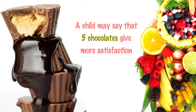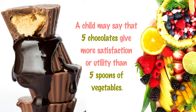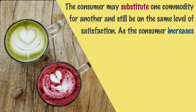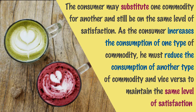For example, a child may say that 5 chocolates give more satisfaction or utility than 5 spoons of vegetables. Also, a consumer consumes a large number of goods. In that case, the consumer may substitute one commodity for another and still be on the same level of satisfaction. As the consumer increases the consumption of one type of commodity, he must reduce the consumption of another type of commodity and vice versa to maintain the same level of satisfaction. For example, a person may get the same level of satisfaction with tea as well as coffee. If he does not get tea, he will have coffee and feels equally satisfied.